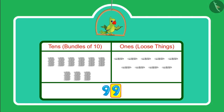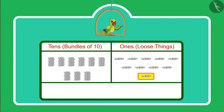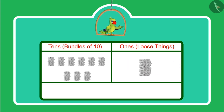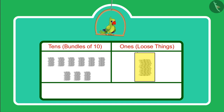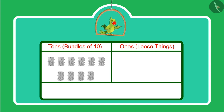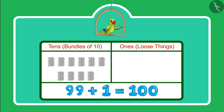There are 9 ones and 9 tens. And if there is 1 more one added, then it will become 10 coins, which means 10 ones. And together 10 ones will make 1 ten, which means 1 more group of 10. That means earlier we had 9 tens and now 1 ten more — and now we have 10 tens, which we call as 100.